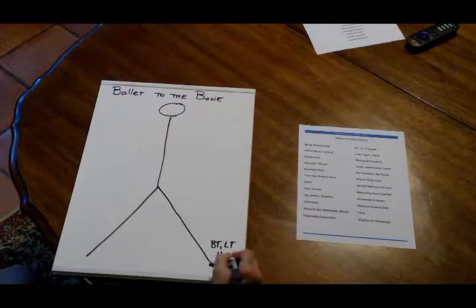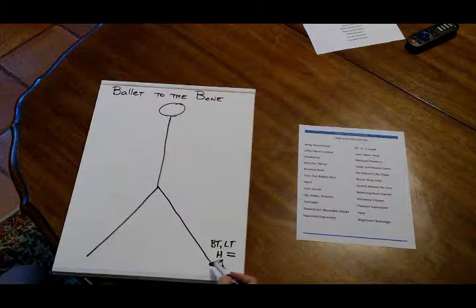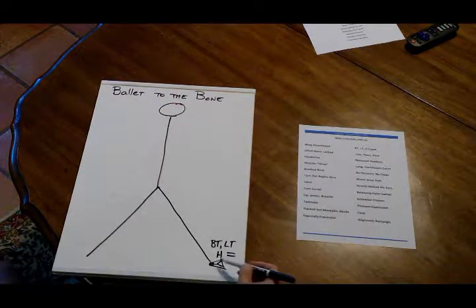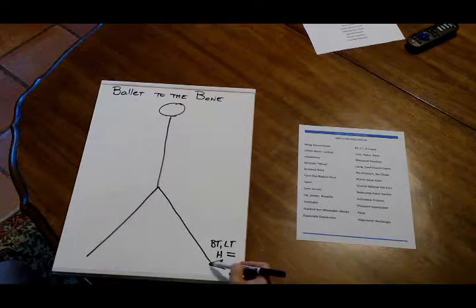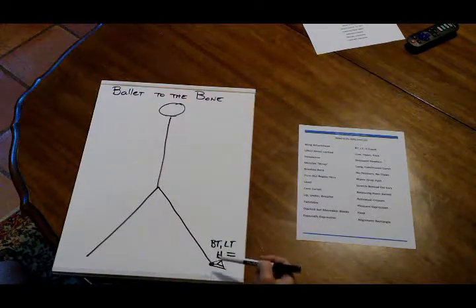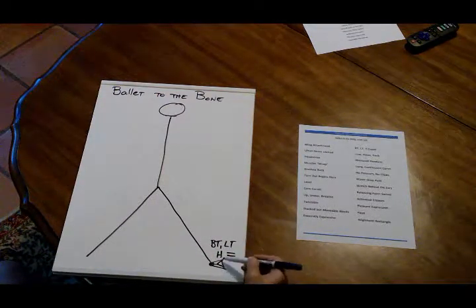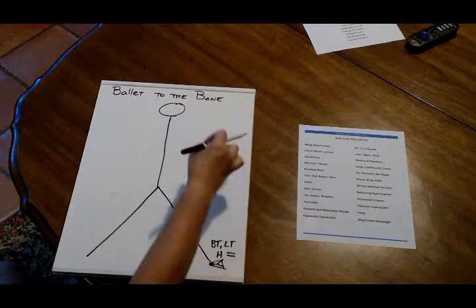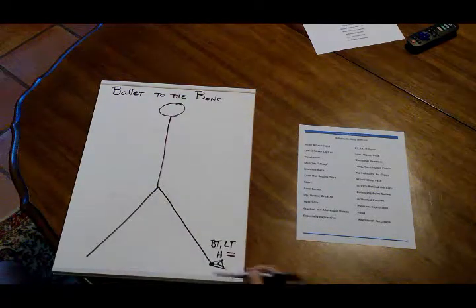I would put the equal sign there because this means that the weight is equally distributed between the big toe, the little toe and the heel. Even when we go up on releve, we keep that balance between big toe and little toe and we think about the heel going straight up and under.